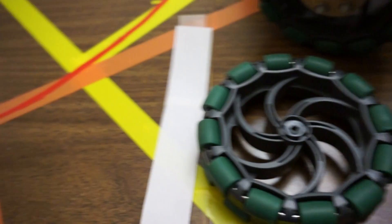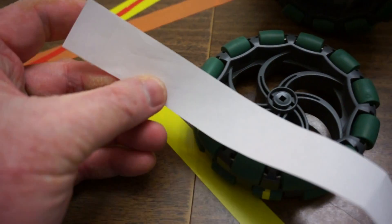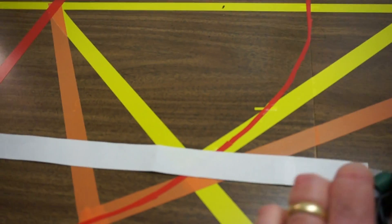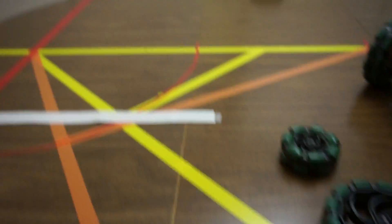Now this piece of paper here was just wrapped around the wheel to get the circumference of the wheel, and so I used this circumference to lay out some stripes on our table here.